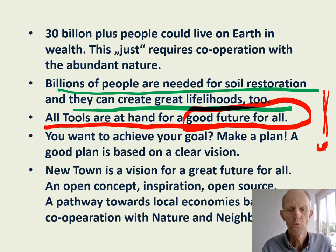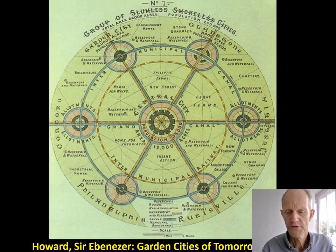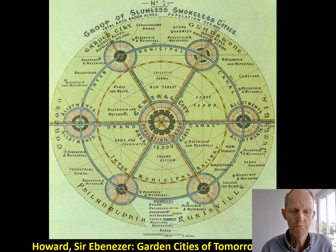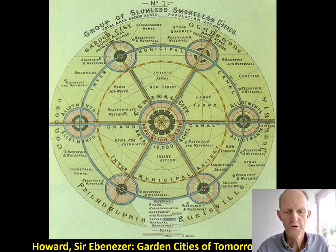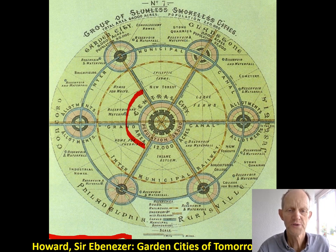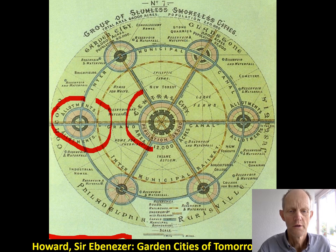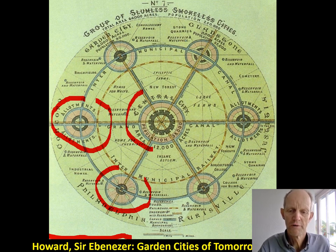If we want to achieve a goal, we need to make a plan, and in order to make a plan, we should start with a great vision. The new town idea came up in 1900 already — Sir Ebenezer Howard in the UK had the idea that around a city there would be garden towns, new towns, gardening villages. This was a great concept, and even a few of those were built.